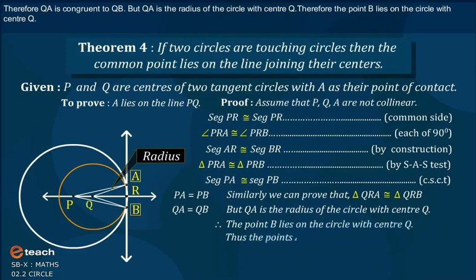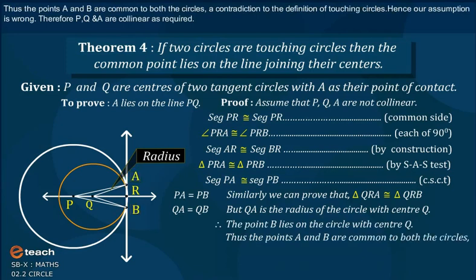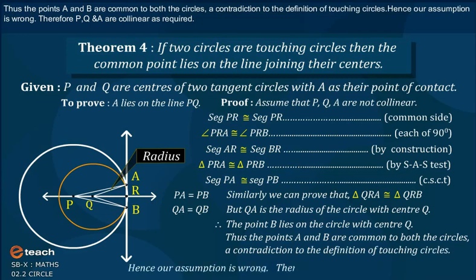Thus, the points A and B are common to both the circles, a contradiction to the definition of touching circles. Hence, our assumption is wrong. Therefore, P, Q and A are collinear as required.